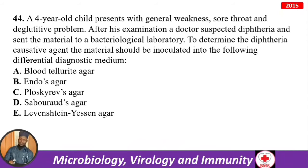A four-year-old child presents with general weakness, sore throat, and difficulty swallowing. A doctor suspects diphtheria and sends material to a bacteriological laboratory. The material should be inoculated into the differential diagnostic medium blood tellurite agar — you will see dark black colonies.